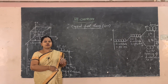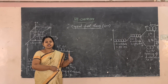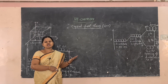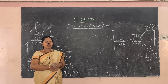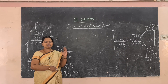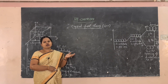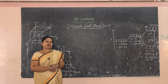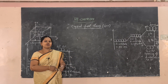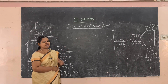Crystal Field Theory overtakes those limitations. For example, Valence Bond Theory cannot explain the nature and color of the coordination complexes, but Crystal Field Theory can explain the color, the nature of bonding, and the magnetic behavior of the coordination complexes.